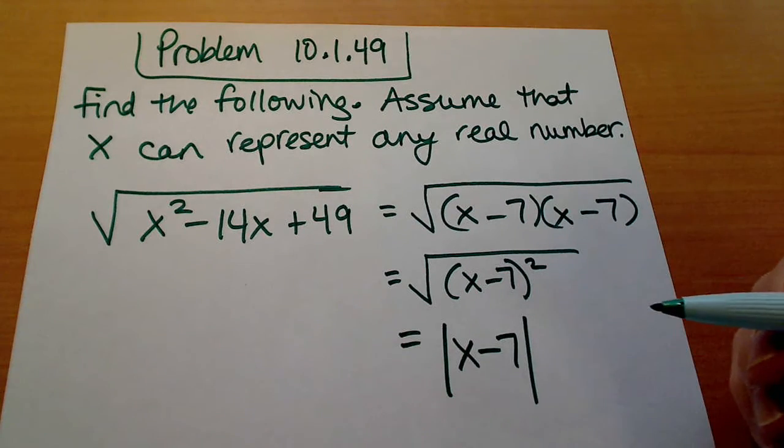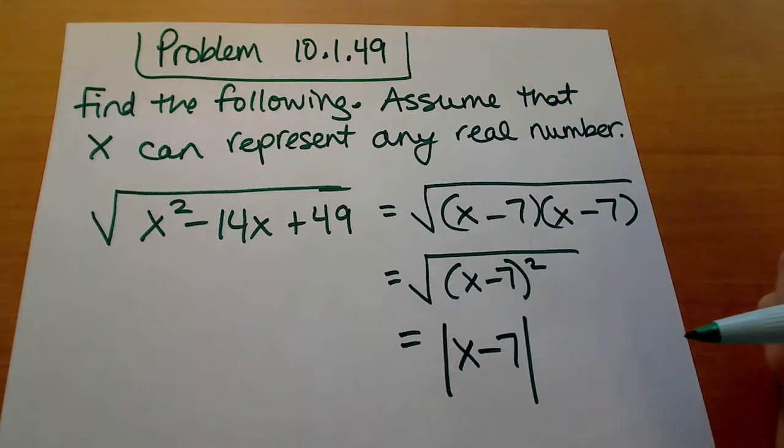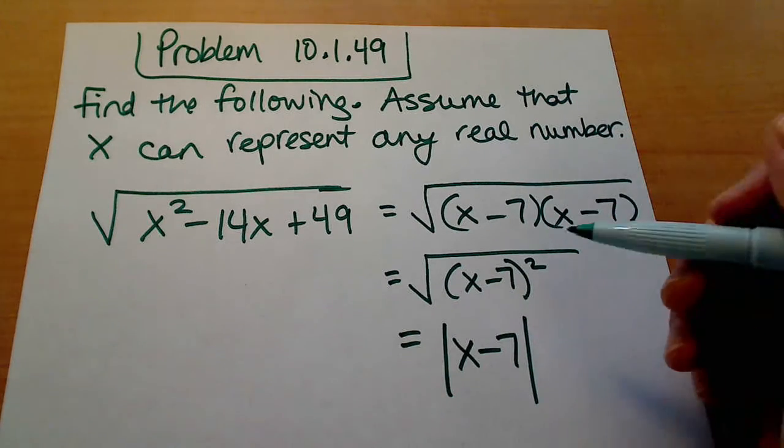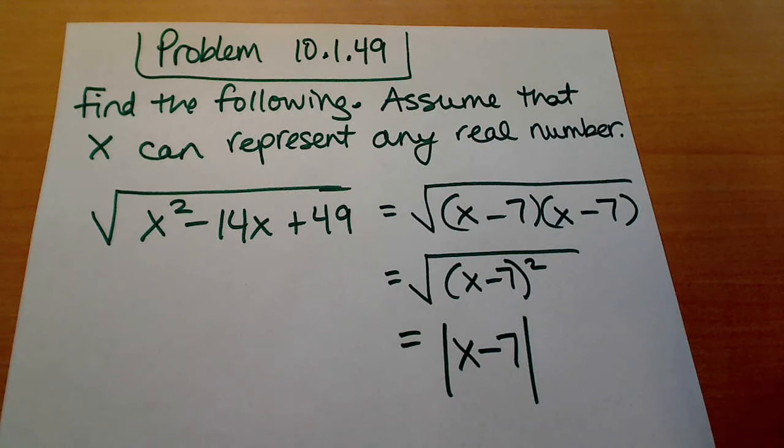And we need to remember to have absolute value signs around it because of the fact that it's an even index and we have a variable there. So our answer here would just be this, the absolute value of x minus 7.